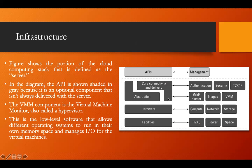Looking at the diagram showing the different components of cloud computing, the diagram represents a server — a physical machine. The API is shown shaded in gray because it is an optional component that is not always delivered with the servers. The API, or Application Program Interface, handles management, and above that layer are the user interfaces.